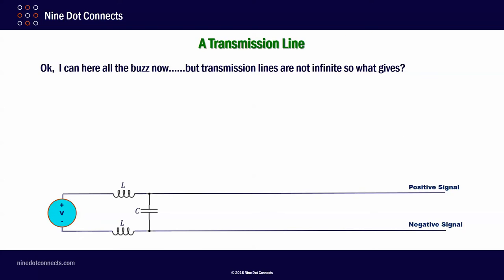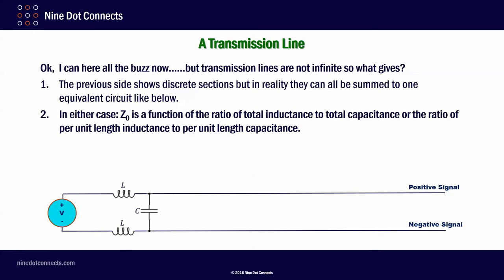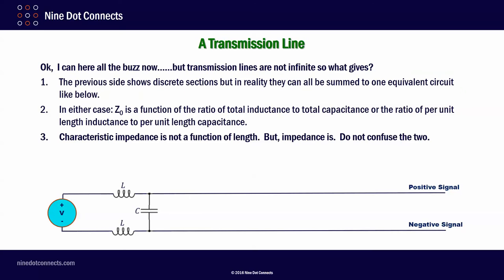Okay, so I can hear all the buzz now. But transmission lines are not infinite, so what gives? The previous slide shows discrete sections, but in reality they can all be summed to one equivalent circuit like below. Remember I talked about them being per inch or per foot? In either case, I want you to understand that the characteristic impedance, Z0, is a function of the ratio of total inductance to total capacitance or the ratio of per unit length inductance to per unit length capacitance. Characteristic impedance is not a function of length. Impedance is. Please do not confuse the two.